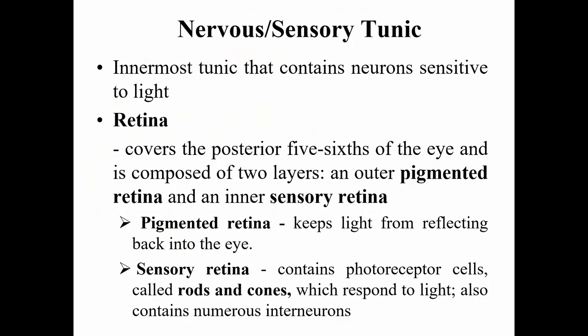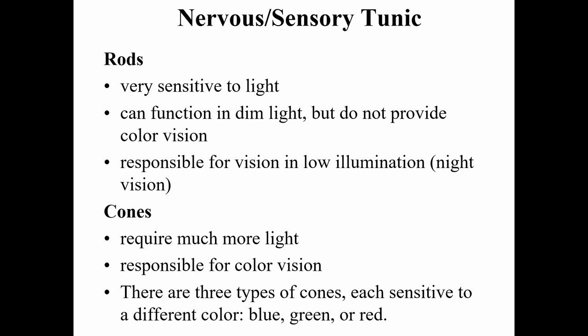The nervous tunic is the innermost tunic containing neurons sensitive to light. The retina covers the posterior five-sixths of the eye and is composed of two layers: an outer pigmented retina, which prevents light from reflecting back, and an inner sensory retina, which contains photoreceptor cells called rods and cones. Rods are very sensitive to light and function in dim light but do not provide color vision. Cones require more light but are responsible for color vision and come in three types: red, blue, and green.